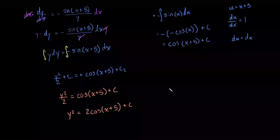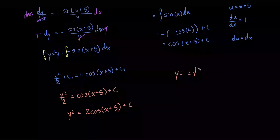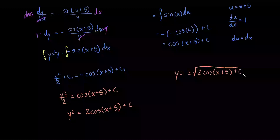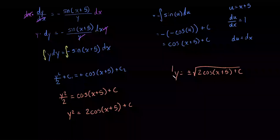Now when we take the square root of both sides, remember that whenever you take the square root you get plus or minus. So we're left with y is equal to plus or minus the square root of 2 cosine of x plus 5 plus c.